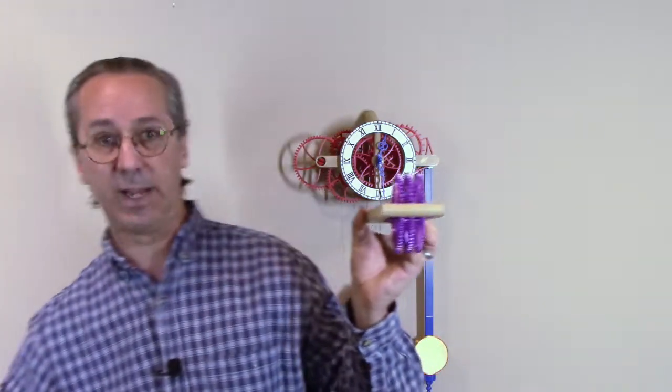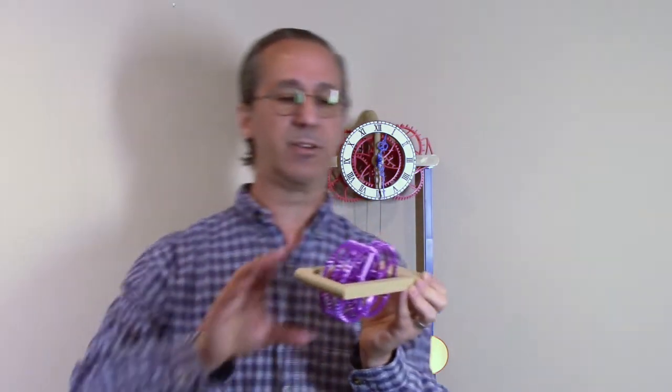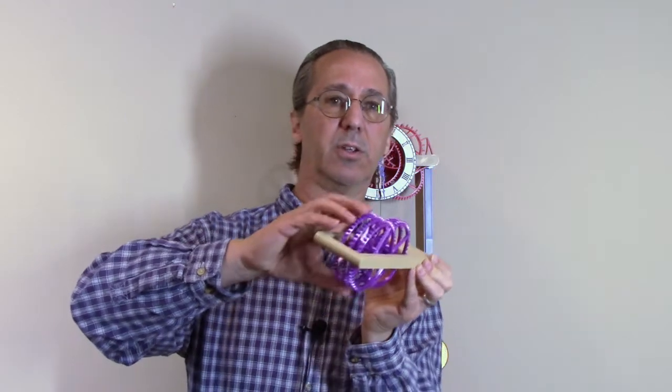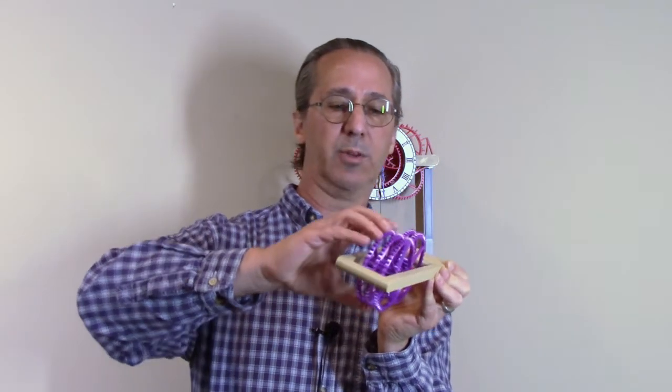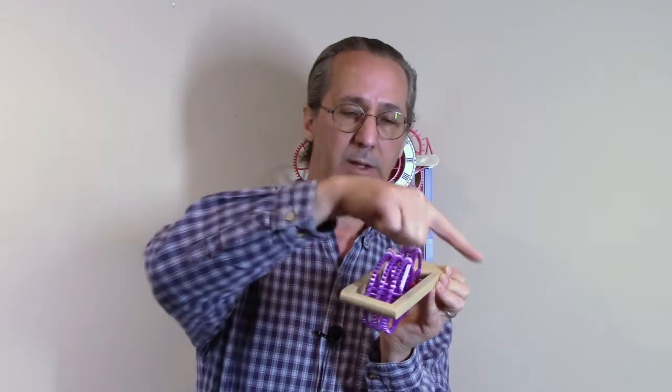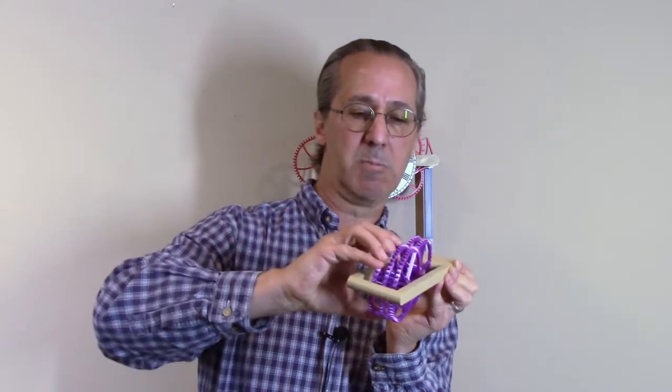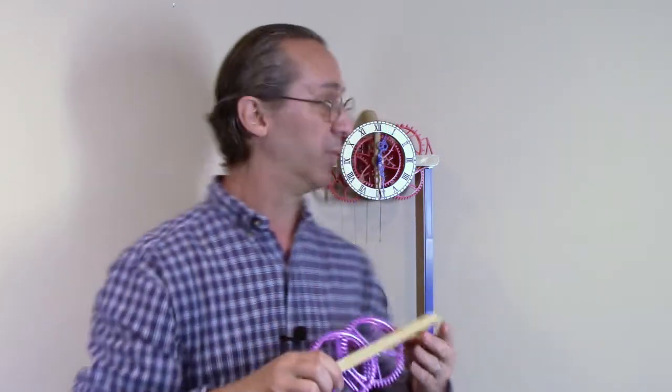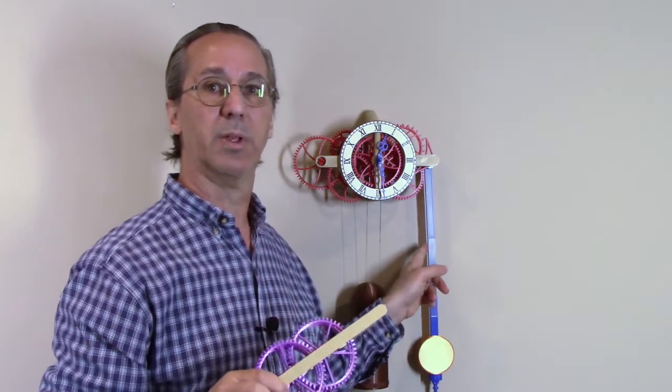If I exaggerate the problem and just tilt the mechanism such that all the pressure is applied in the direction towards the fastest moving gear I really cannot even turn this. As soon as I tilt away then a very small pressure and the gears will start moving again. So I believe the exact same problem is occurring on this easy build clock.